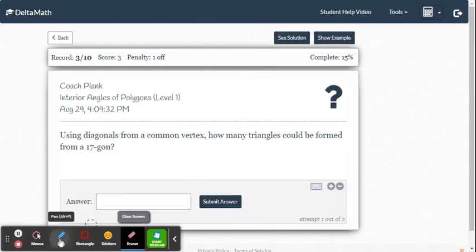This one should be a quick one. It says how many diagonals form a common vertex. So how many triangles could be formed for a 17-gon? So it's always two less triangles, those diagonal triangles, two less than total sides. So you just go 17 minus 2. So this one's just a quick one. It's 15.